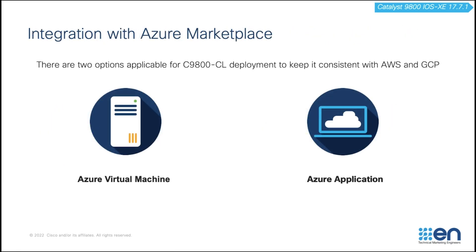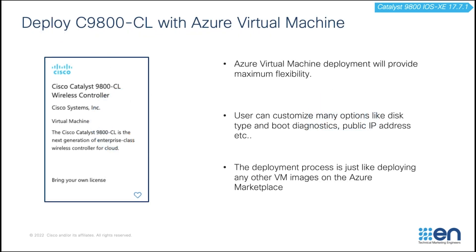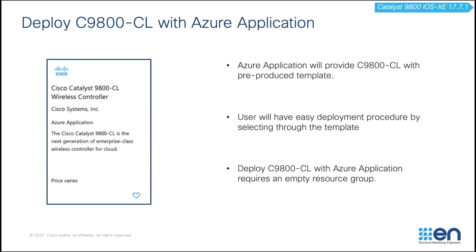Now let's talk about what is actually available on the Azure marketplace. There are two options available for 1900 CL deployment. One is Azure Virtual Machine and the other one is Azure Applications. Deploying with Azure Virtual Machine provides maximum flexibility and customization, just like deploying any other VM images through the Azure marketplace. Deploying with Azure Application provides pre-produced templates that make deployment easy by selecting through the template.